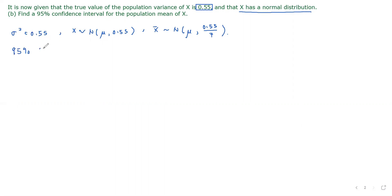And to find a 95% confidence interval for the population mean of x, that is given by x bar plus minus the critical value. So we have 0.05 divided by 2, that is 0.025 here. And we multiply this by sigma over square root of n. That would be the formula that we use. And we know that sigma squared is 0.55. So sigma over root of n here, this can be the square root of 0.55 over 7.